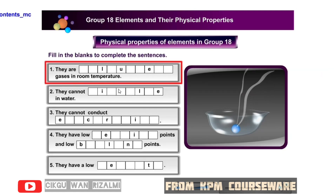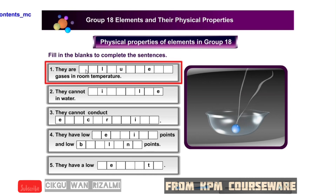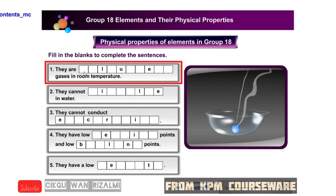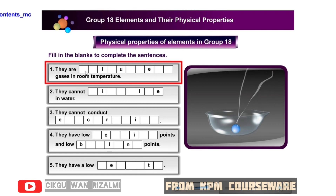Let's find out the physical properties of elements in group 18. There are five sentences with missing alphabets. Can you figure out the missing alphabets? Type in your answer and click on the submit button.